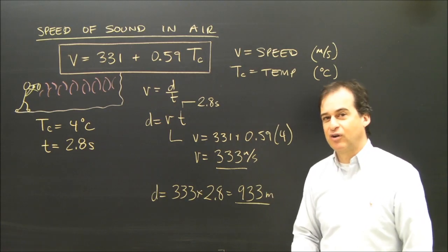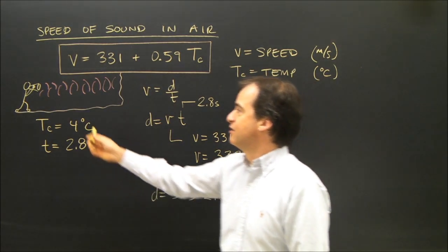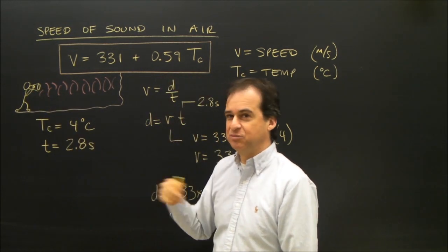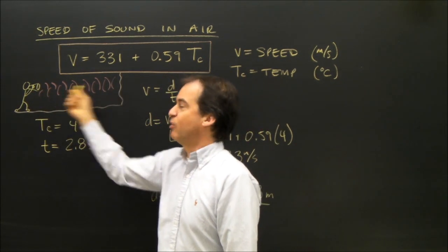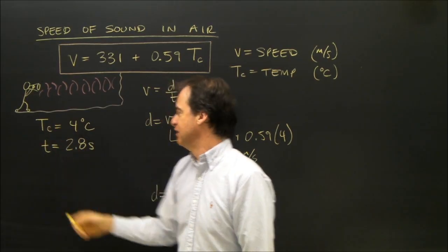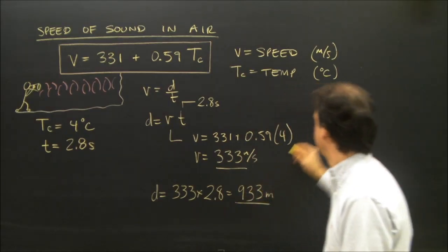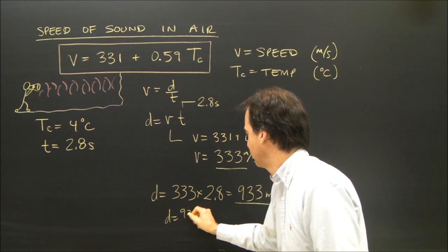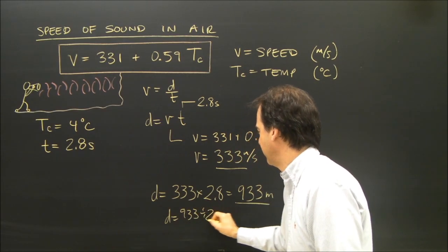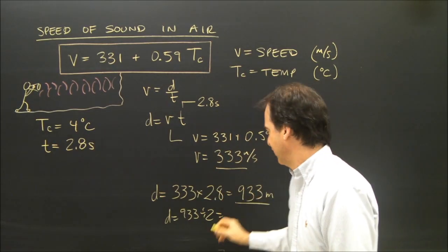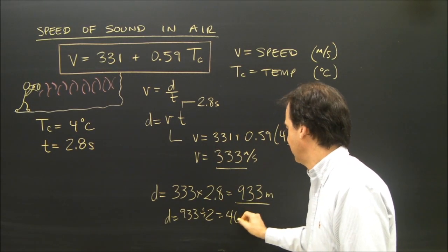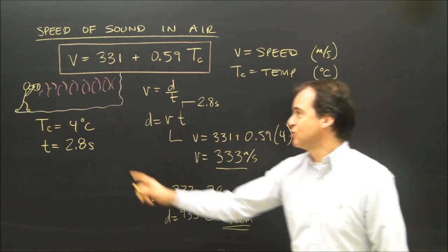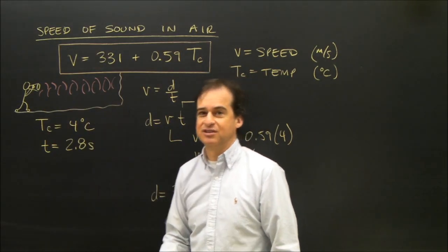That's how far the wave travelled. But keep in mind, the distance it travelled was to the mountain and back. And similar to one of the wave questions we did earlier, that's twice the distance that I'm looking for. So I have to take this distance, 933 divide by 2, because that's the trip there and back, and I get 466 metres. So the distance to the mountain is 466 metres.